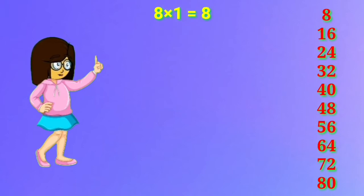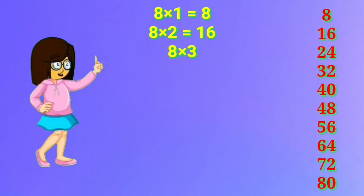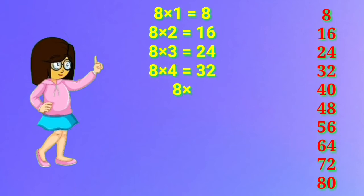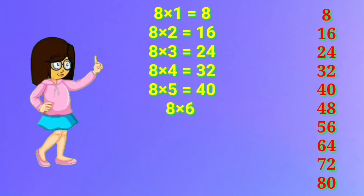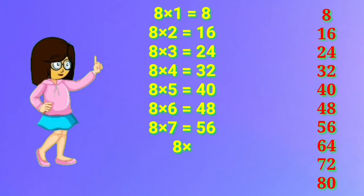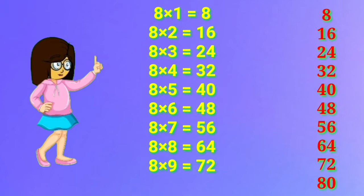8 one's are 8. 8 two's are 16. 8 three's are 24. 8 four's are 32. 8 five's are 40. 8 six's are 48. 8 seven's are 56. 8 eight's are 64. 8 nine's are 72. 8 ten's are 80.